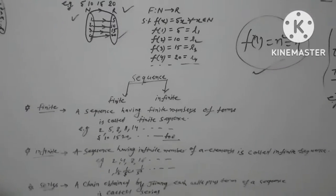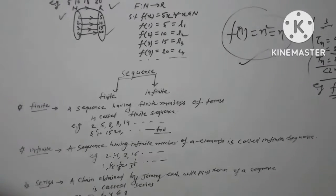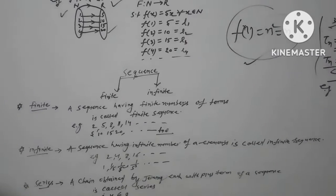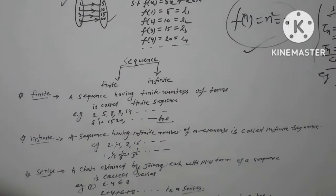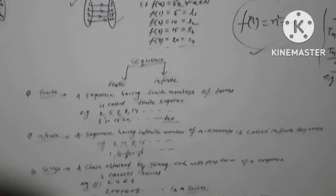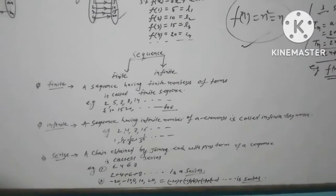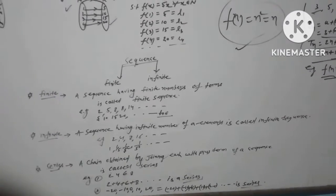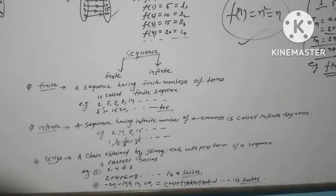Infinite: a sequence having infinite numbers of elements is called an infinite sequence. Example: 2, 4, 8, 16. Series is obtained by joining each term with plus of sequence, is called a series. Example: 2, 4, 6, 8 becomes 2 plus 4 plus 6 plus 8 dot dot dot. This is a series.